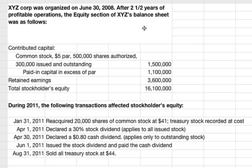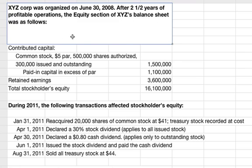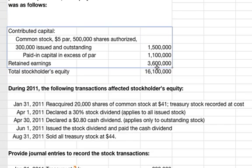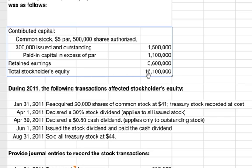In this video, this is an example problem for accounting for stock transactions. The problem is XYZ Corp., which was organized on June 30, 2008. After two and a half years of profitable operations, the equity section of XYZ's balance sheet was as follows: contributed capital included common stock at $5 par, 500,000 shares authorized, 300,000 issued and outstanding, paid-in capital in excess of par was $1.1 million, retained earnings was $3.6 million, and total stockholders' equity was $16.1 million.